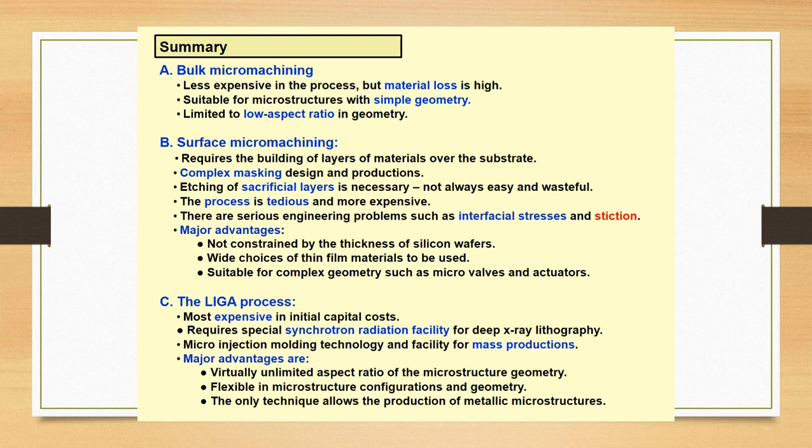The LIGA process is most expensive in initial capital cost. It requires special synchrotron radiation facility for deep x-ray lithography, and micro injection molding technology and facility for mass production. The major advantages are: virtually unlimited aspect ratio of the microstructure geometry, as you can see high aspect ratios can be formed up to 1000 or more, flexible in the microstructure configurations and geometry. It's the only technique that allows the production of metallic microstructures. Thank you.